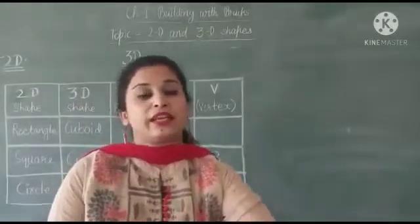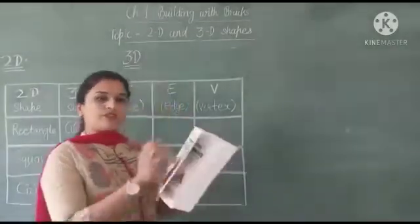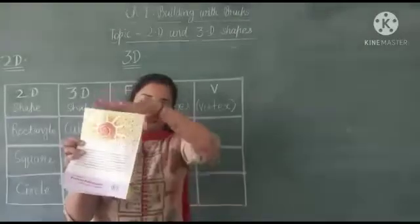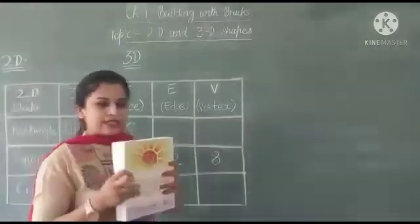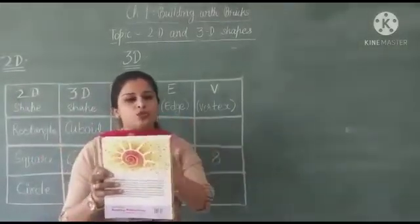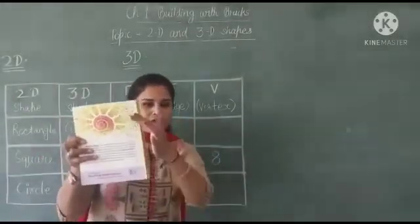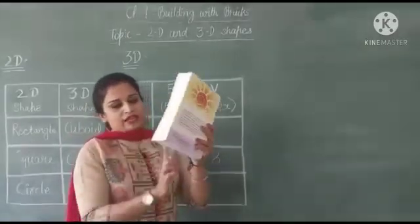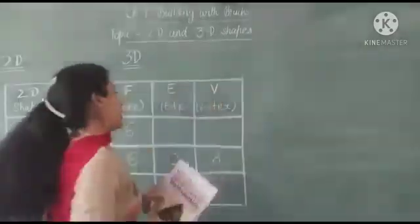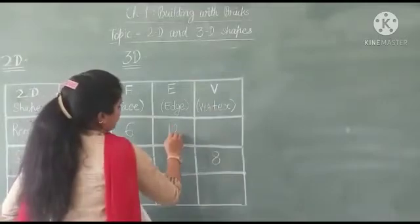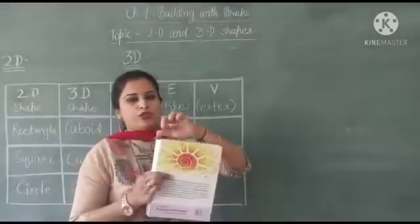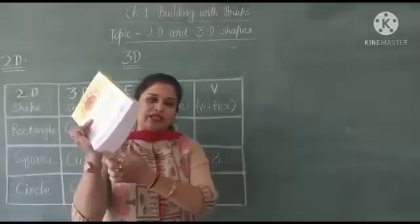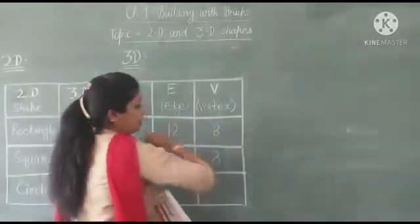Same as in cuboid. Let's count the faces. 1, 2, 3, 4, 5 and 6. 6 faces. How many edges? 1, 2, 3, 4, 5, 6, 7, 8, 9, 10, 11, 12. 12 edges. And how many vertices? 1, 2, 3, 4, 5, 6, 7, 8. 8 vertices here.